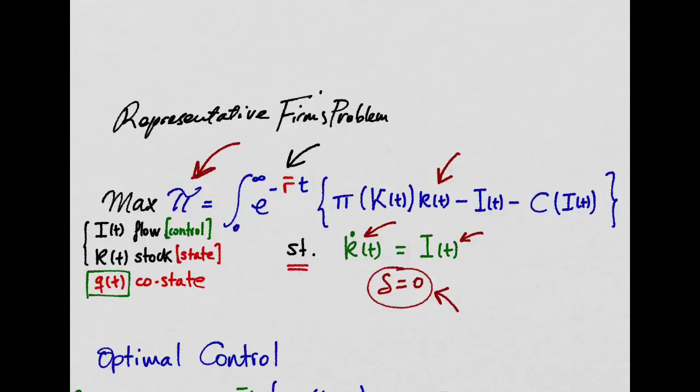So, to maximize the infinite discounted stream of profits, we define q as the multiplier for the equation of motion of the capital stock of the company. q can be interpreted as the shadow price of one unit of capital.